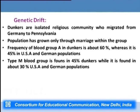Another example is the Dunkers, an isolated religious community that migrated from Germany to Pennsylvania and only marries within the group. The frequency of blood group A in Dunkers is about 60% whereas in USA and German populations it is about 45%. The frequency of type M blood group in Dunkers is 45% whereas in USA and German populations it is about 30%. This variation in allele frequency occurred because the founding population was very small, and inbreeding has continued those allele frequencies unabated from generation to generation.